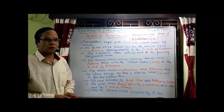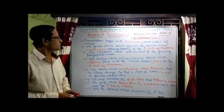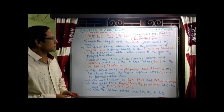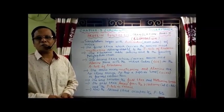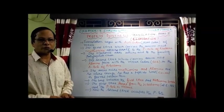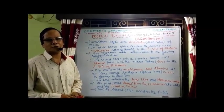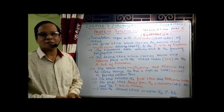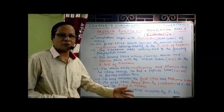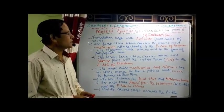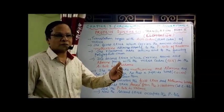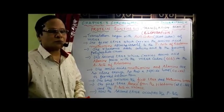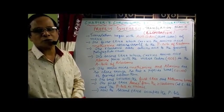Hi students, I welcome you once again to the lesson on the Chromosomal Basis of Inheritance. In the last class we were talking about the Protein Synthesis Process, under which the first event we completed was Transcription. The second event is Translation. There are three stages in Translation: Initiation, which we have completed already. Now I am continuing Translation Part 2, under which we have to continue the Elongation Process.